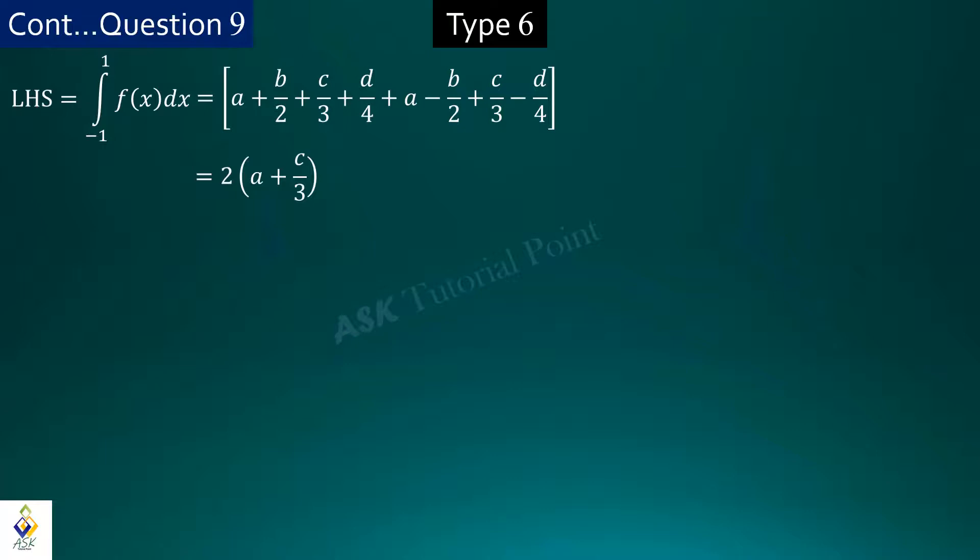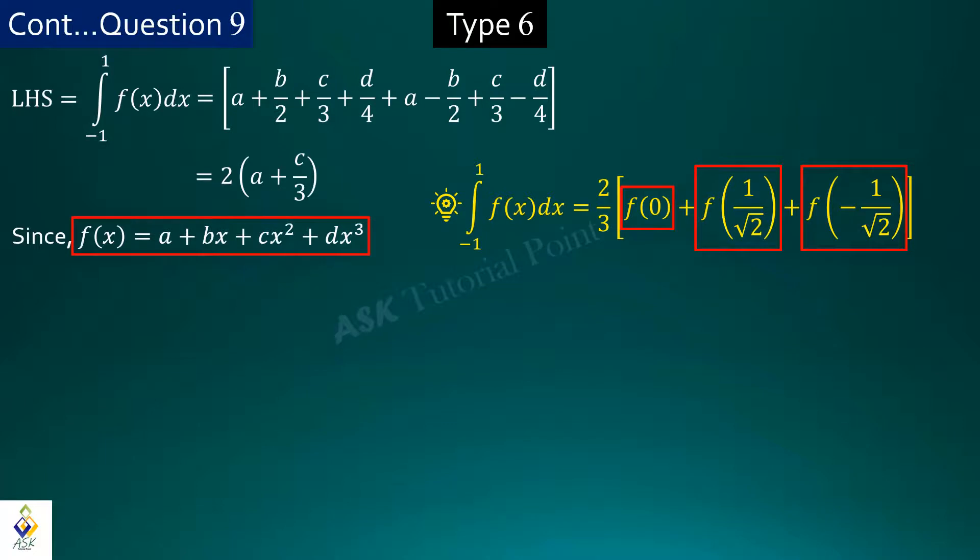Now we can simplify the right hand side expression. So fx is equal to a plus bx plus cx square plus dx cube. So on the right hand side terms, we will place this function at x equal to 0, 1 by root 2, and minus 1 by root 2.